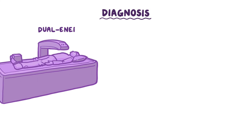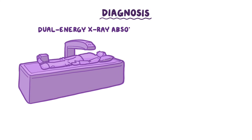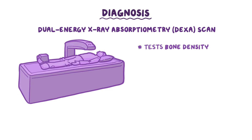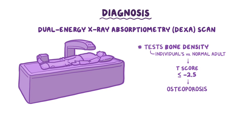Osteoporosis is usually diagnosed with a dual-energy x-ray absorptiometry, or DEXA scan, which tests for bone density. The test compares an individual's bone density to that of a normal adult, yielding a T-score. A T-score less than or equal to negative 2.5 is diagnostic of osteoporosis.